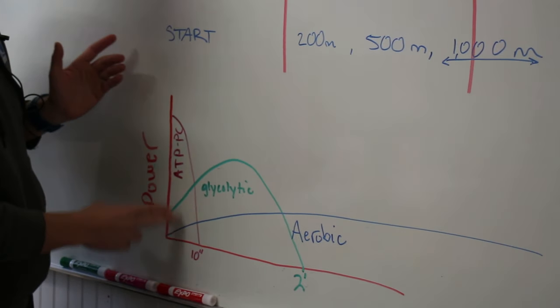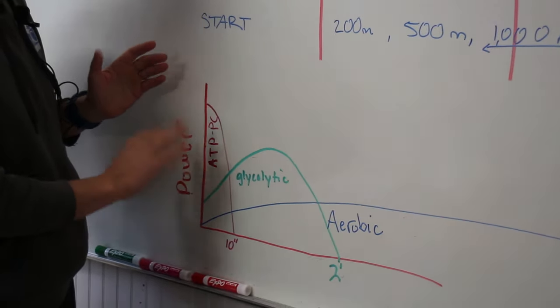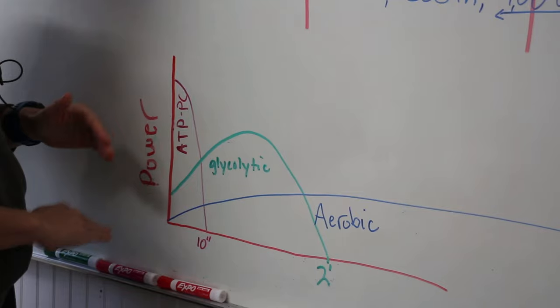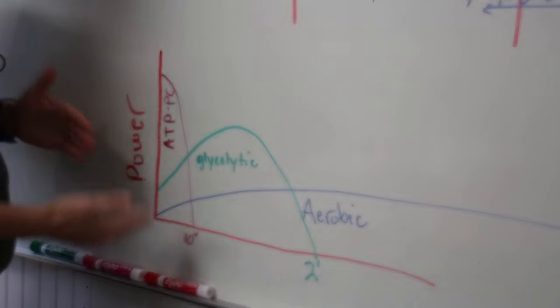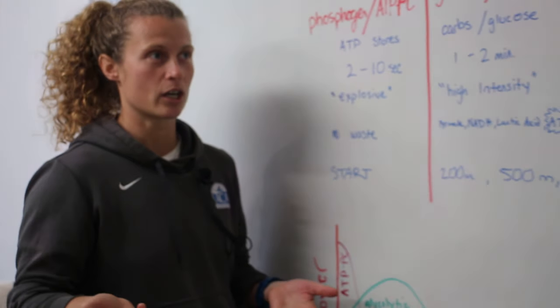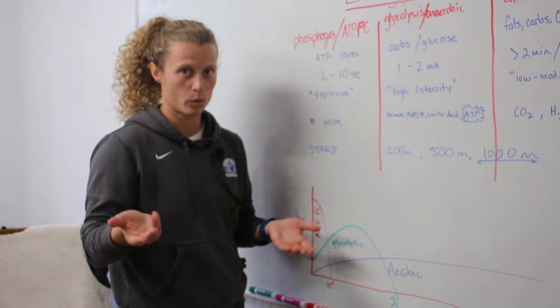So right here, this shows you that the ATP or the phosphagen system, it's starting high because it's already there. You don't have to develop it, it doesn't have to ramp up, it's going to be lasting you to 10 seconds. This is what you were given when you were born. You're not going to be able to develop this greater, it's just the storage that you were born with.